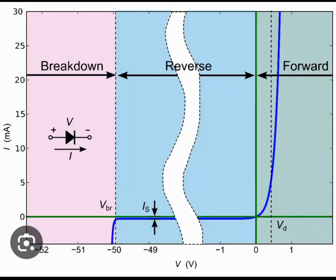Let's have a look at this picture. This is a typical IV characteristics of a semiconductor PN junction diode. As you can see, the y-axis shows the current in the milliampere range and the x-axis shows the voltage that is applied across the diode.